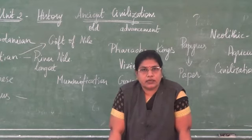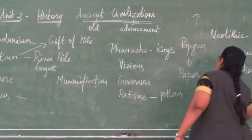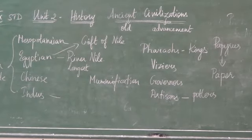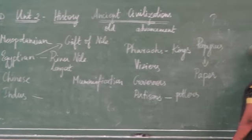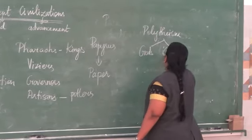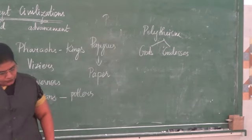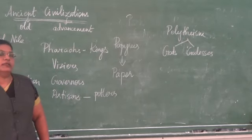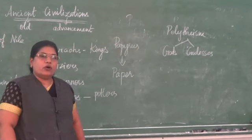The Egyptians had their own practice in religion — they practiced polytheism. Polytheism is a practice of praying to many gods and goddesses. They worshipped Ammon, Ra, Seth, Horus, and Anubis. They especially worshipped the sun god Ra, also called Ammon.